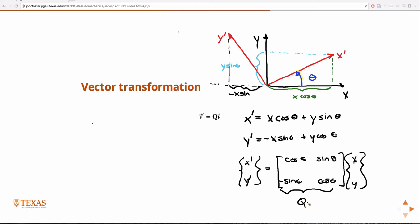So back to this equation. Any vector in the original coordinate system v transforms into the prime coordinate system v prime via Q.